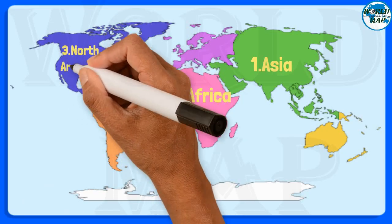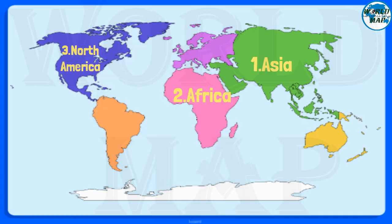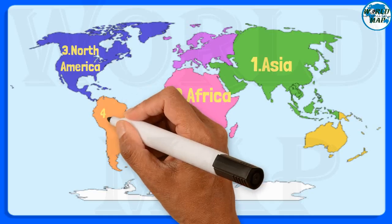Number 3: North America. It is the third largest continent on Earth in terms of area and fourth largest in terms of population. It comprises 23 nations and is entirely located in the Northern Hemisphere.